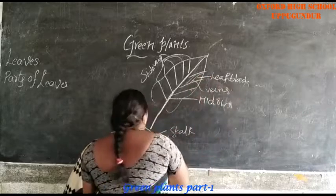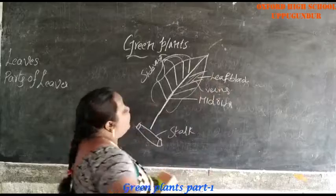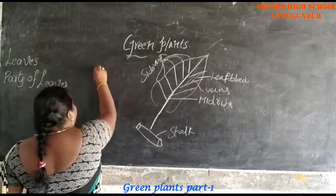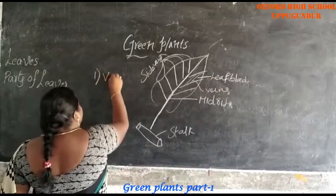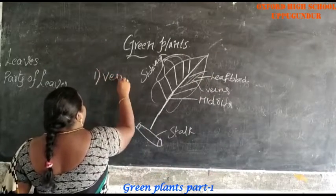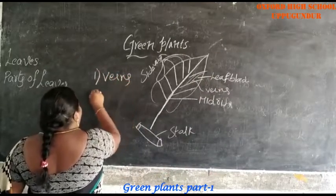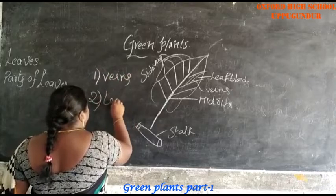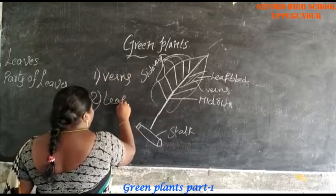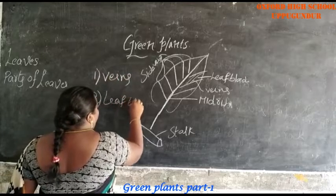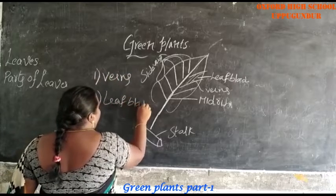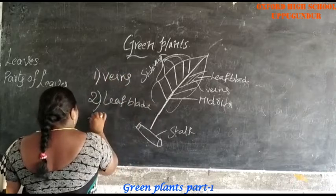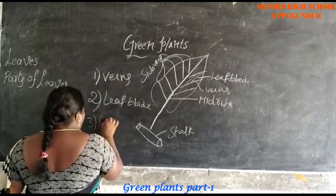The parts of the leaves are: number 1, veins; number 2, leaf blade; number 3, leaf stalk.